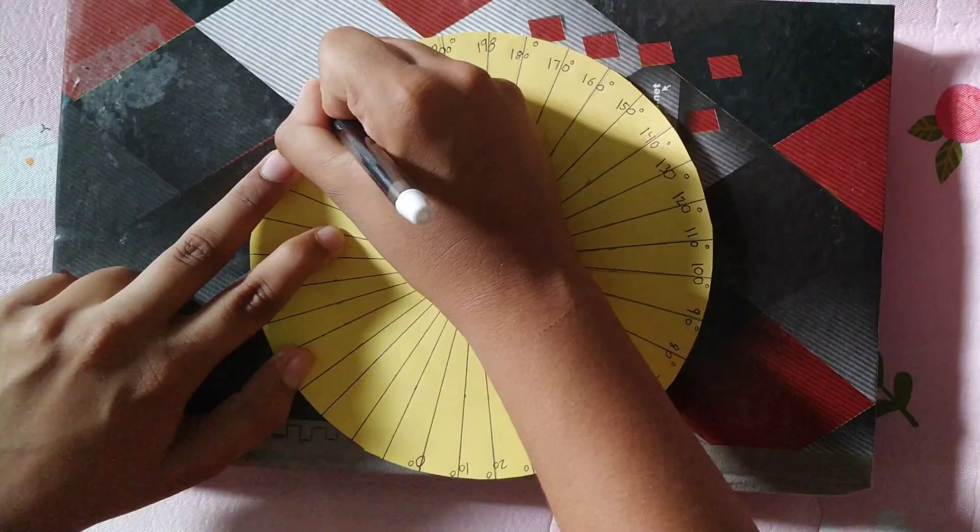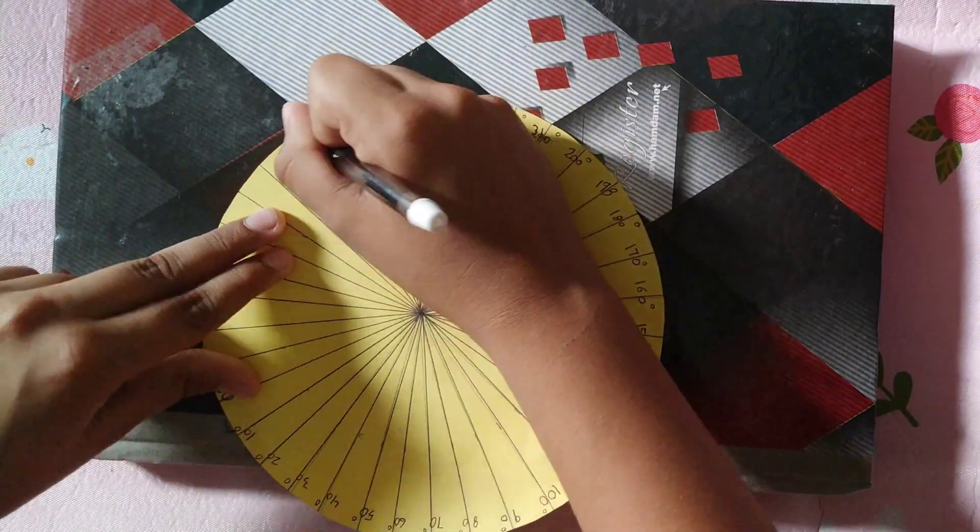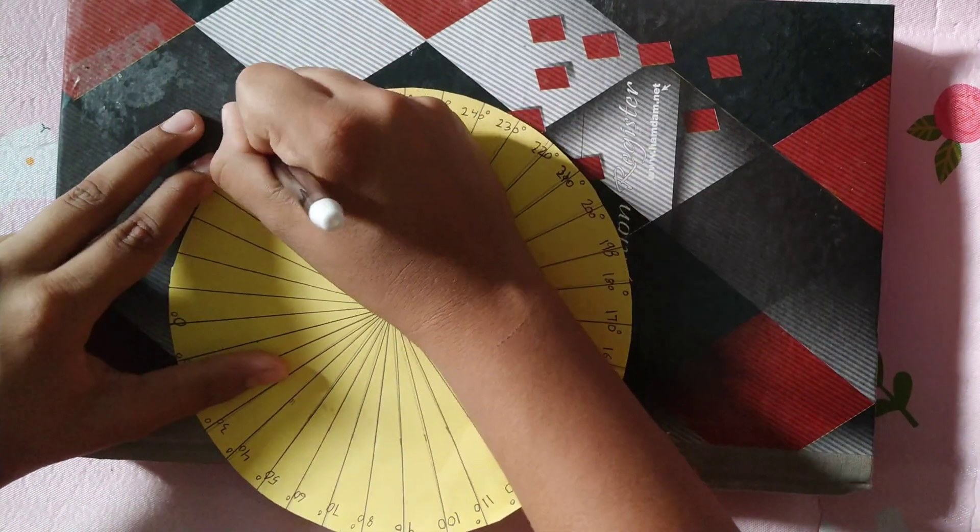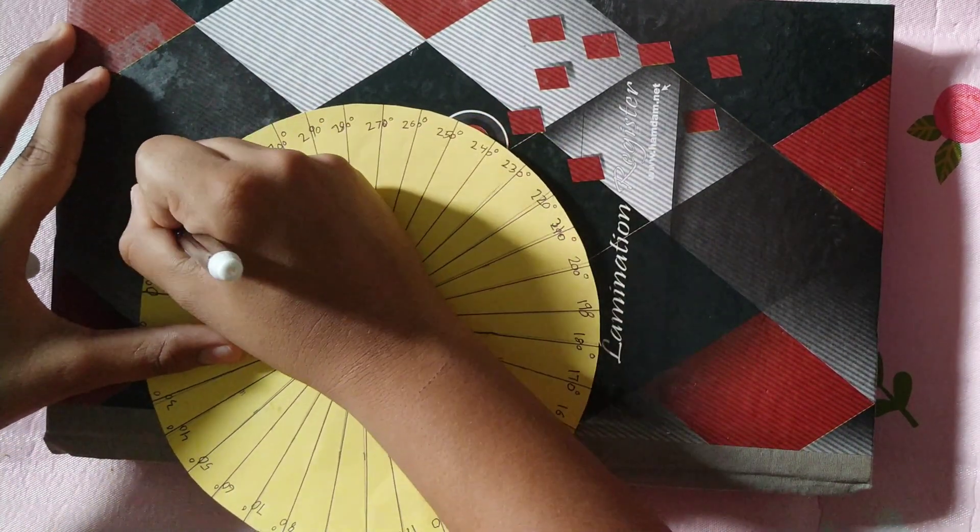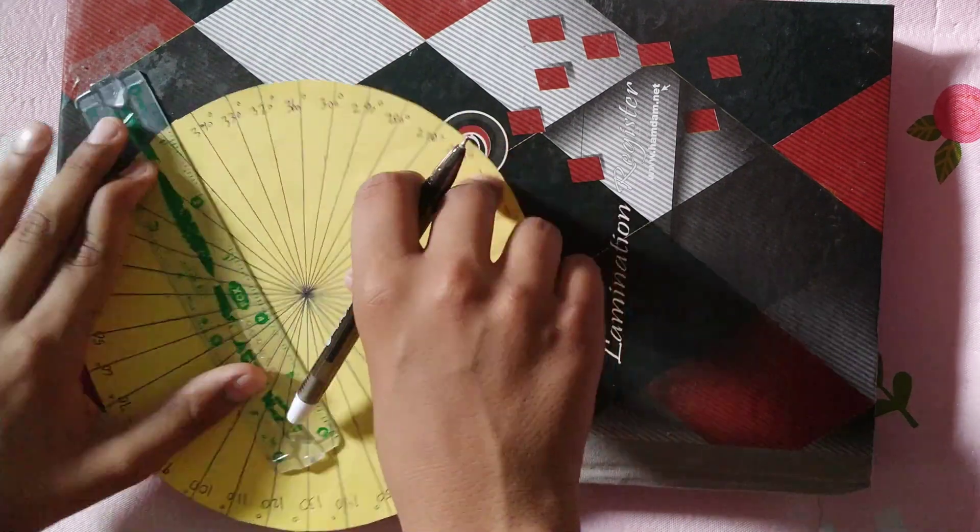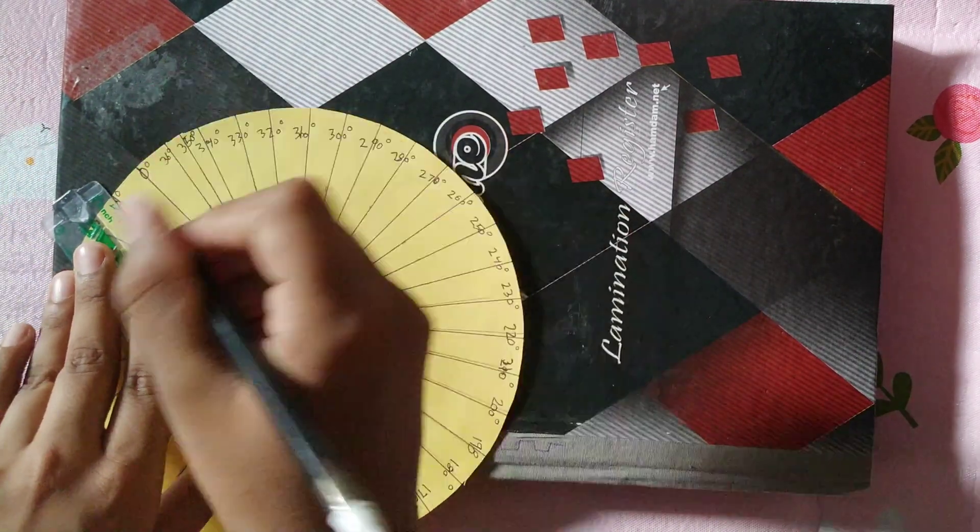Now we have marked the angles. As you can see I've started from 90, you can start from 0 or any angle you like. So as you can see now, I'm finally almost done with it and now I'm done finally.